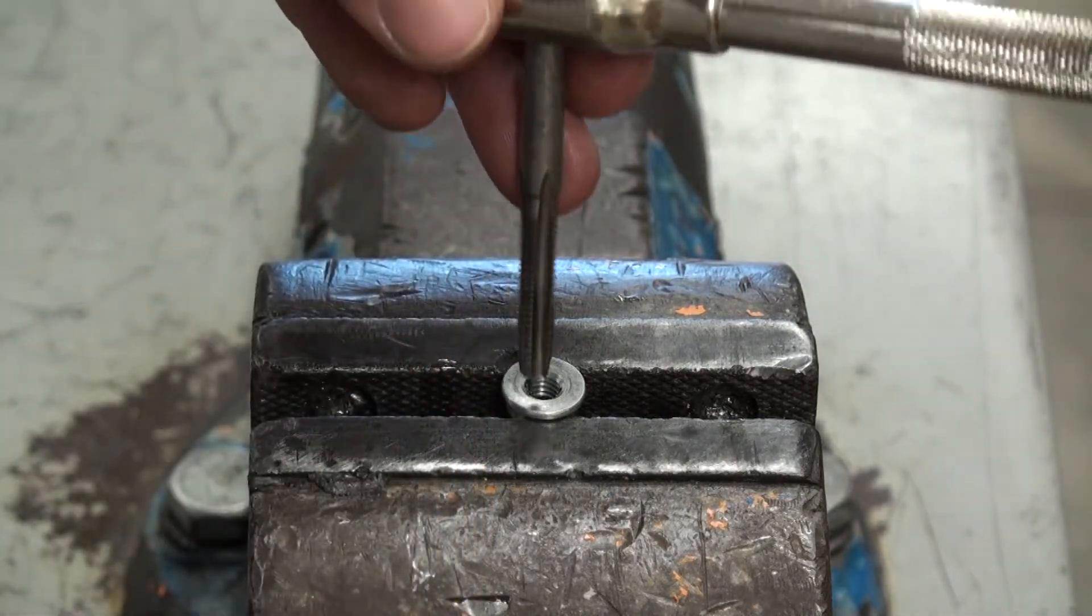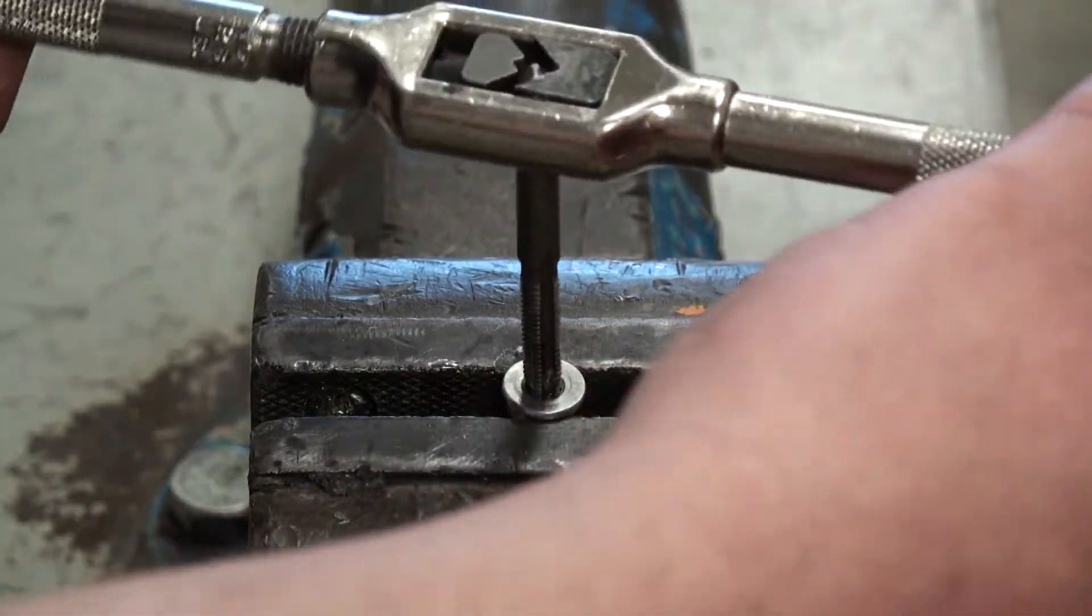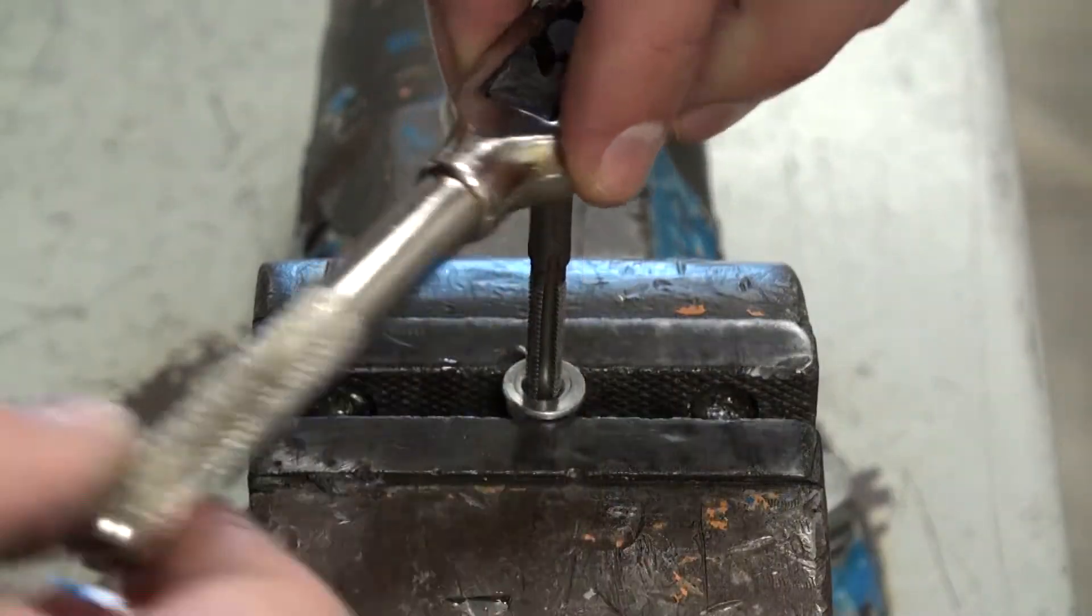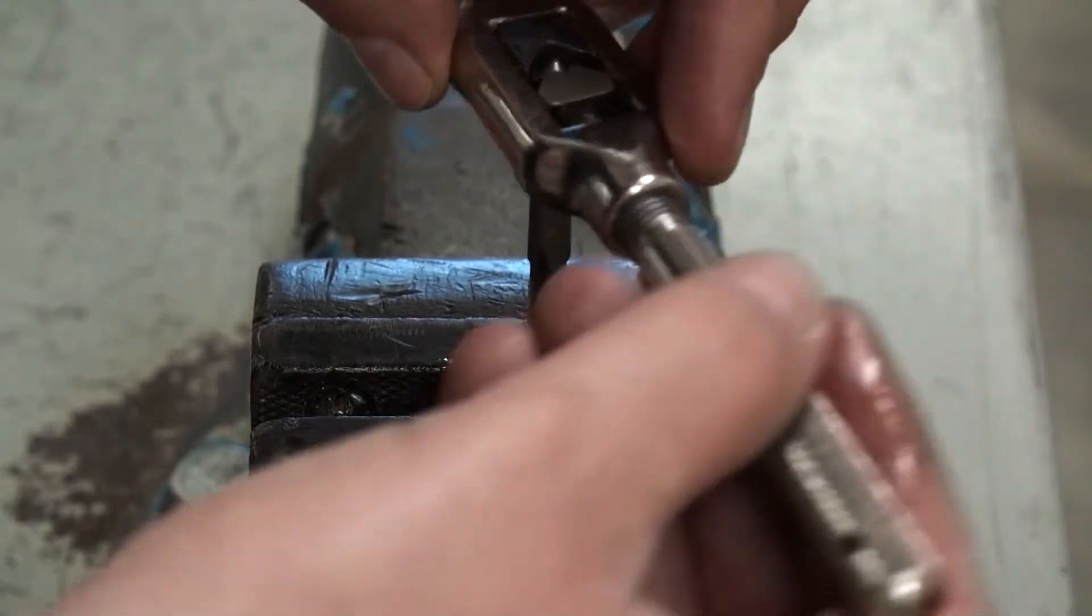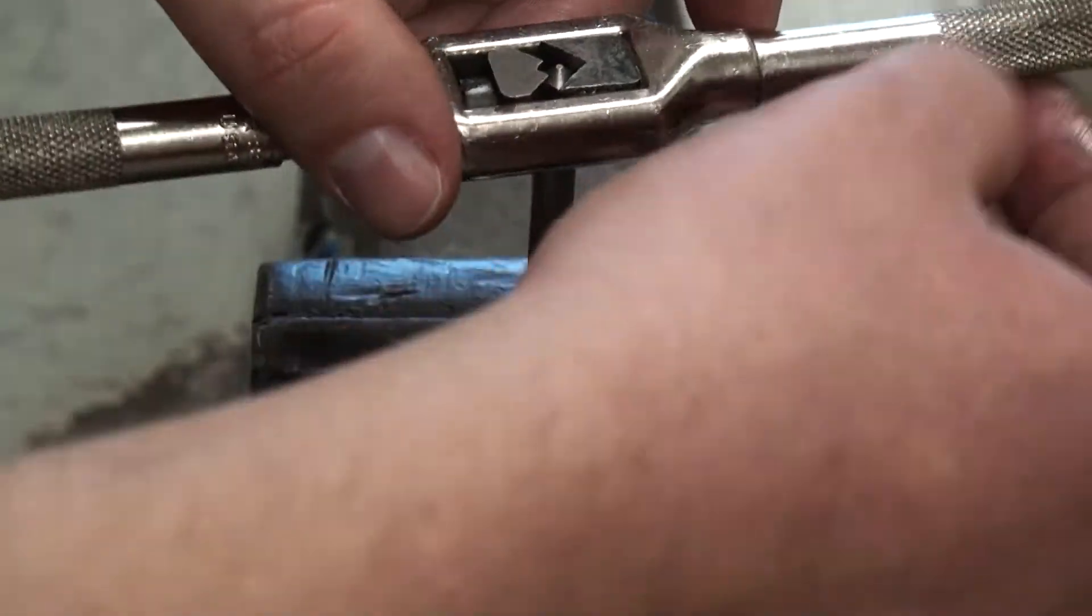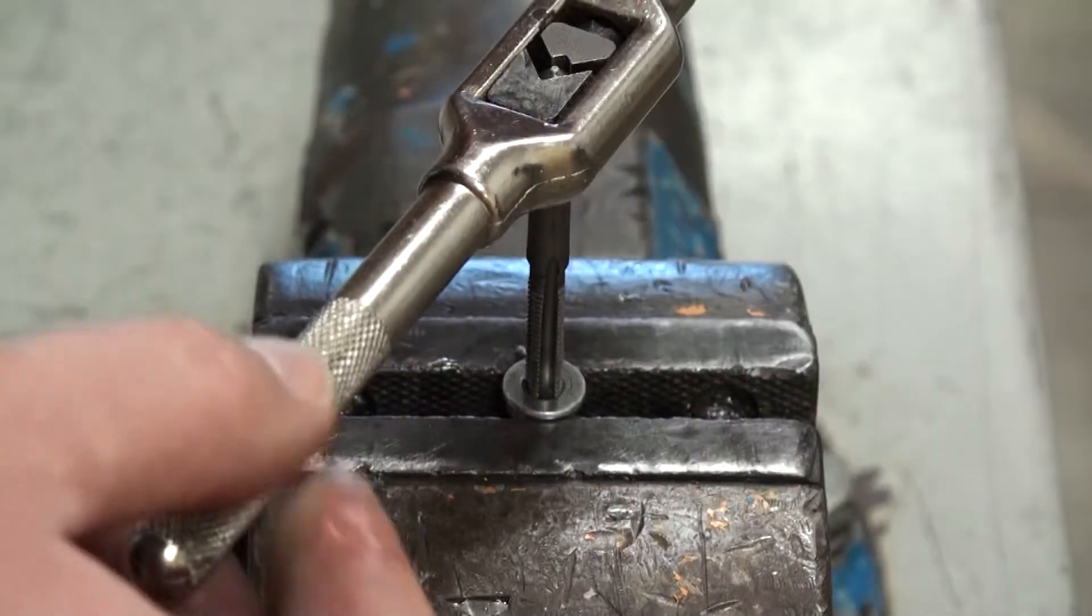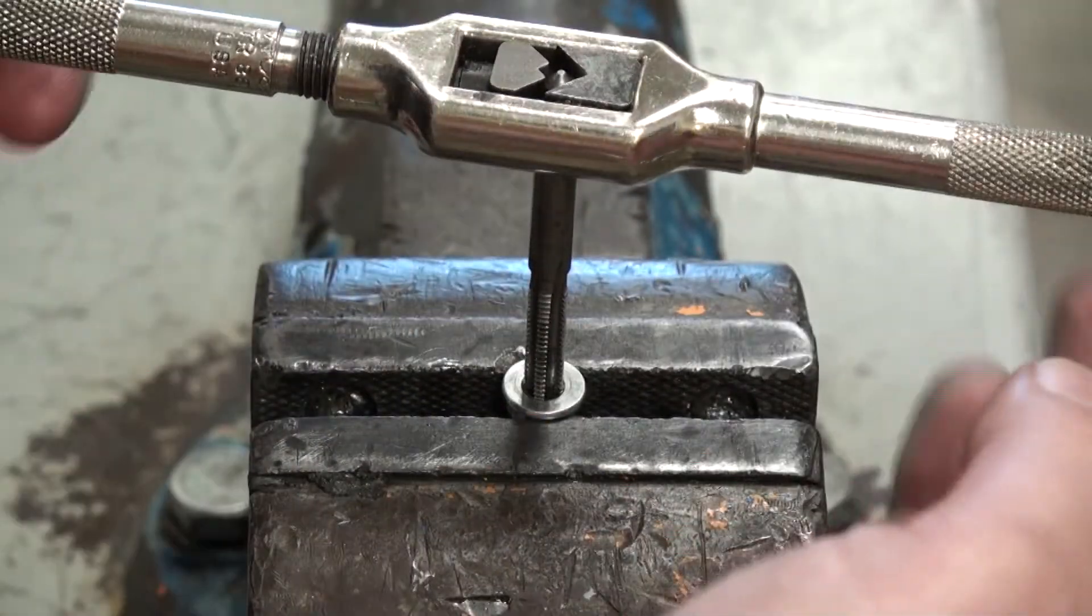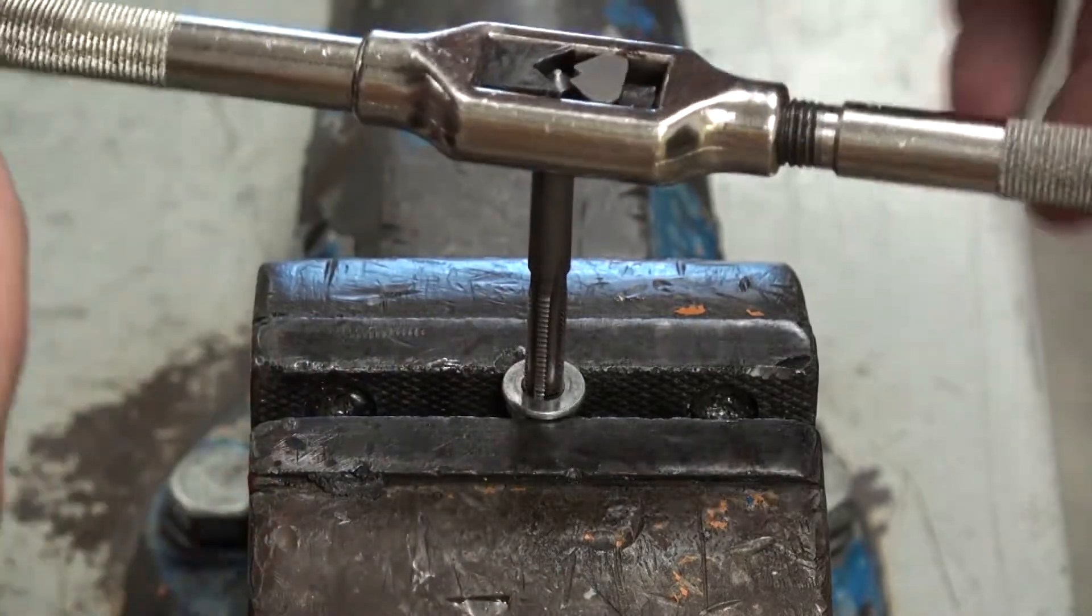Now when I get the tap started inside the nut, I want to make sure that I am perfectly perpendicular to the nut. I want to make sure that the threads catch inside the current threads that are already there so I'm not re-threading the hole. Once I feel them catch and I feel the cutting begin on the messed up part of the threads, I can continue turning this around, cutting a little bit at a time.